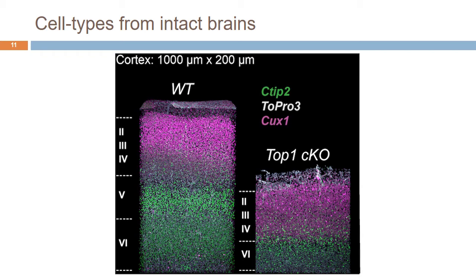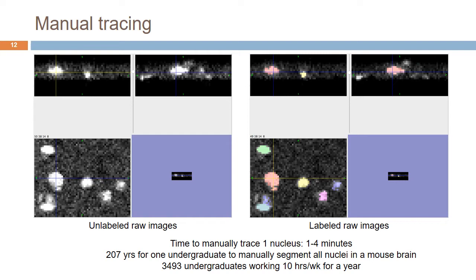In order to count cells you have to delineate what is a cell versus what is not a cell. You take raw images with noise and label them. Several undergraduates in the lab — Selene, Jessica, and Zach — are working on this. It takes about four minutes to trace each individual nucleus in 3D, going through each slice one by one. There are 100 million nuclei in the mouse brain, so it would take 207 years for one undergraduate to manually do it, or 3,000 undergraduates working 10 hours per week. Obviously we need automated methods.